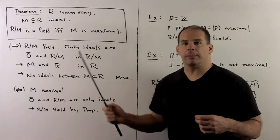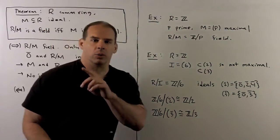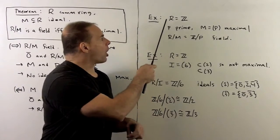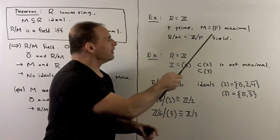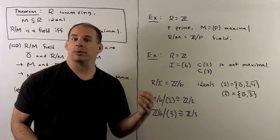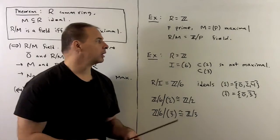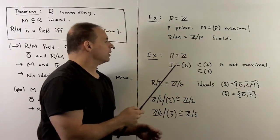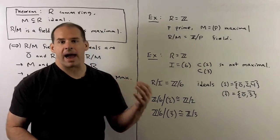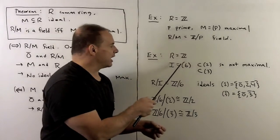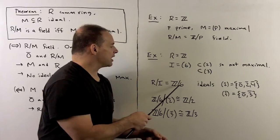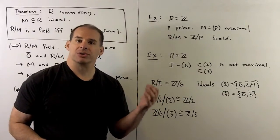With the theorem, we have three ways to construct fields. Using the theorem itself: take R equal to the integers, P a prime — then the ideal generated by P is maximal. Taking the quotient gives ℤ mod P, which we've seen is a field. To contrast, take R equal to the integers again with the ideal generated by 6. This is not maximal — this ideal is contained in the ideals generated by 2 and by 3. Taking the quotient gives ℤ mod 6, which has zero divisors, so it's not a field.